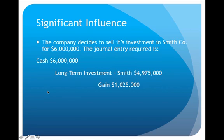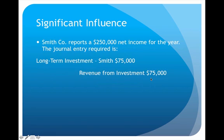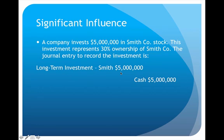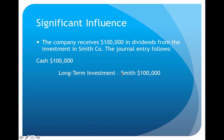Now we've decided to sell the investment in Smith Company for six million dollars. I debit cash for six million and credit long-term investment in Smith to remove it from the books. The book value is $4,975,000 — to see where that comes from, I go back to the previous entries. My initial investment was five million, then the dividend lowered it by $100,000, bringing it down to $4,900,000.